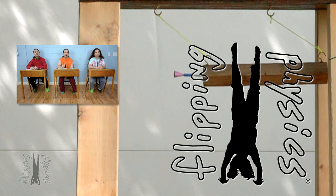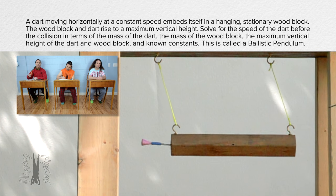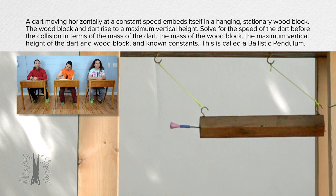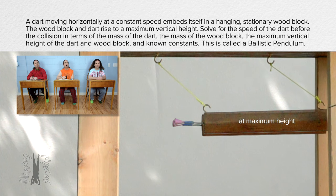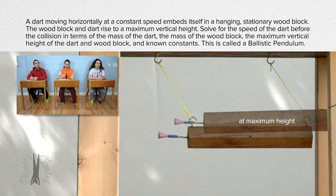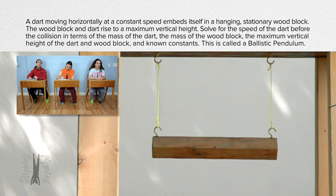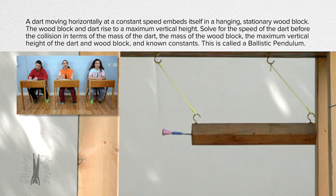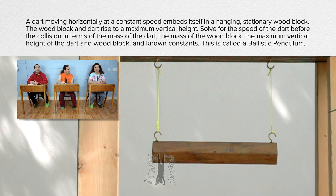Flippin' physics! The dart moving horizontally at a constant speed embeds itself in a hanging, stationary wood block. The wood block and dart rise to a maximum vertical height. Solve for the speed of the dart before the collision in terms of the mass of the dart, the mass of the wood block, the maximum vertical height of the dart and wood block, and known constants. This is called a ballistic pendulum.